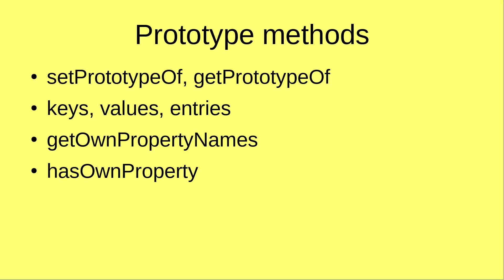Hello everybody, welcome to the JavaScript course. In this video, I'm going to discuss some of the prototype methods: setPrototypeOf and getPrototypeOf, then the keys, values, and entries methods, then getOwnPropertyNames, and finally the hasOwnProperty method. These are quite helpful for understanding the inheritance relationship of objects.